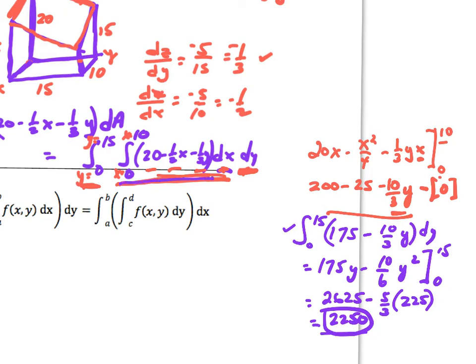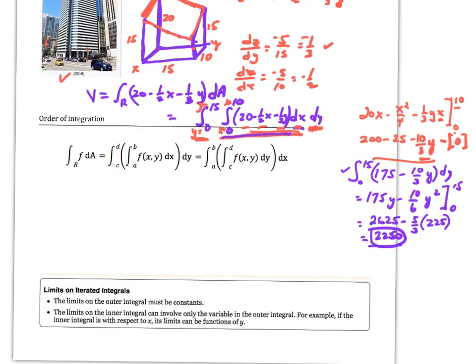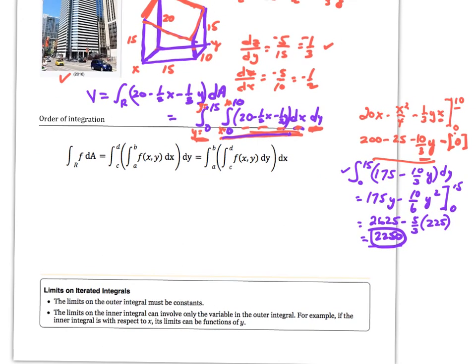Fix the other variable like a constant and work from there. We can also reverse the limits and it should turn out to be the same thing. If c and d are the limits on y and a and b are on x, then we can write the iterated integral either way — they should be equivalent.